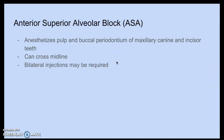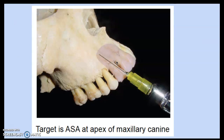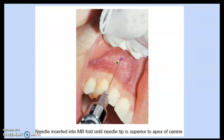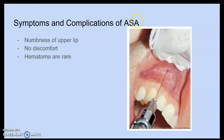Symptoms and complications of the MSA include numbness of the upper lip; there shouldn't be any discomfort and hematomas are rare. The ASA anesthetizes the pulp and buccal periodontia of the maxillary canine and incisor teeth. It can cross the midline and bilateral injections may be required. The target is the ASA nerve at the apex of the maxillary canine.